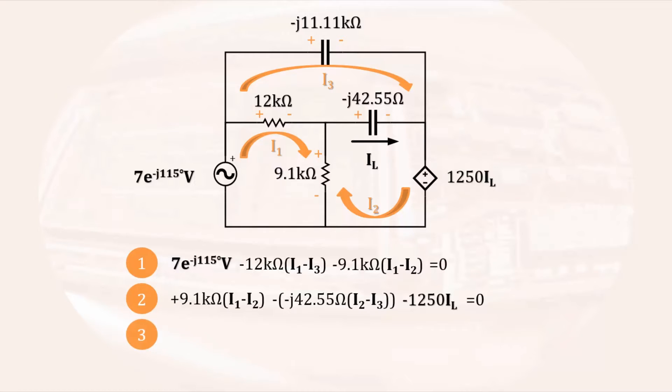For the third loop, again starting in the lower left-hand corner, the first thing is a voltage drop of minus J11.11 kiloohms I3, followed by a voltage increase of minus J42.55 ohms times I2 minus I3, and an increase of 12 kiloohms times I1 minus I3. That completes the loop, so the equation must be equal to zero.